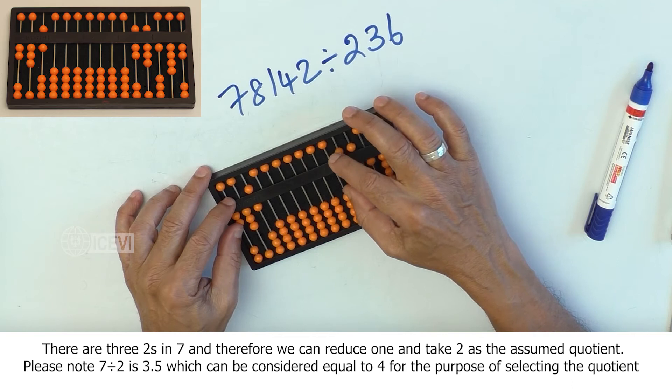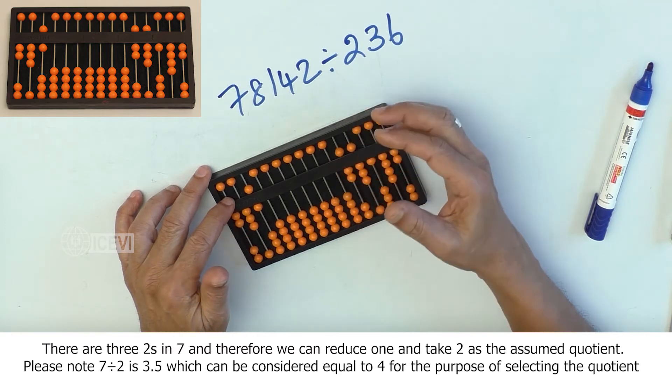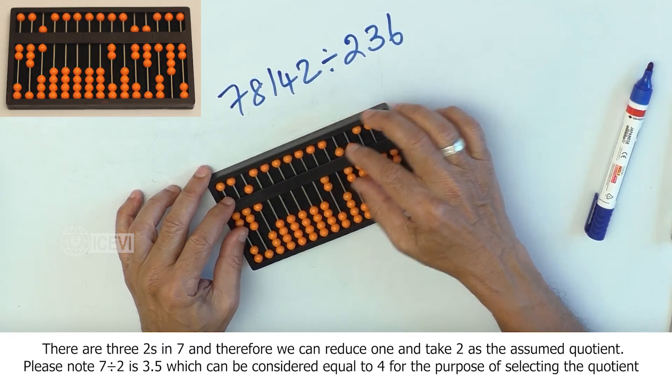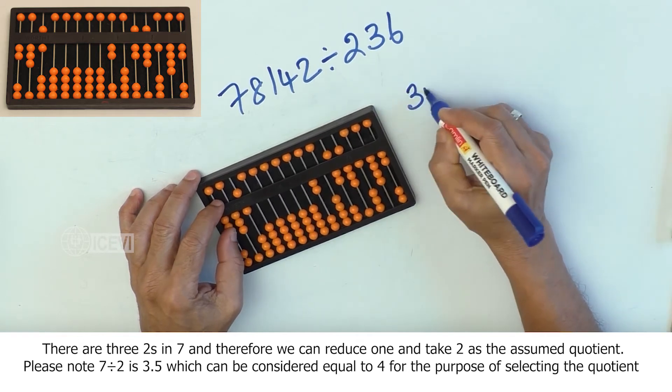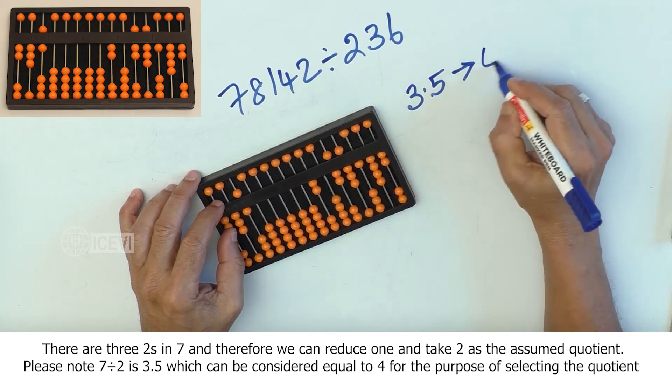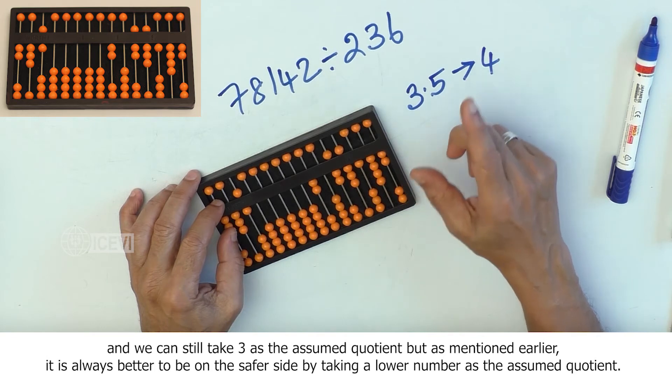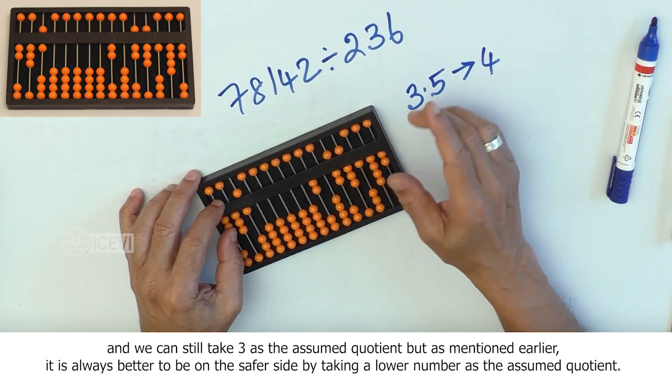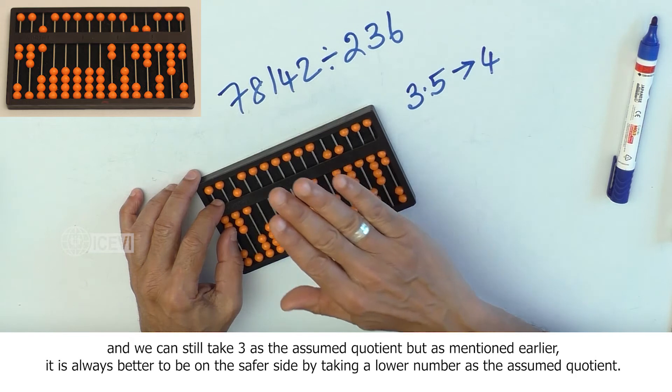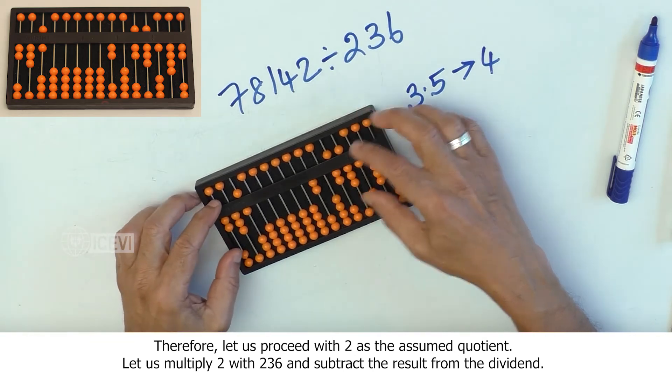There are three 2s in 7 and therefore we can reduce 1 and take 2 as the assumed quotient. Please note, 7 divided by 2 is 3.5 which can be considered equal to 4 for the purpose of selecting a quotient and we can still take 3 as the assumed quotient. But as mentioned earlier, it is always better to be on the safer side by taking a lower number as the assumed quotient. Therefore, let us proceed with 2 as the assumed quotient.